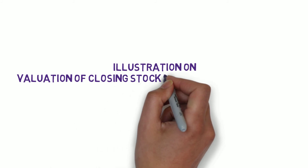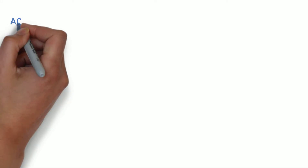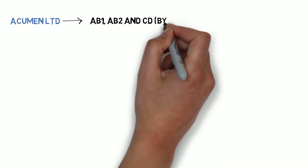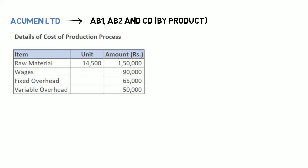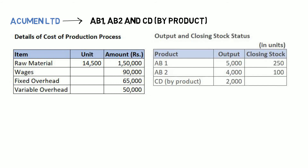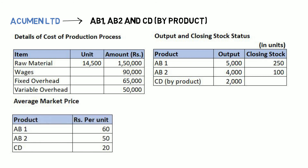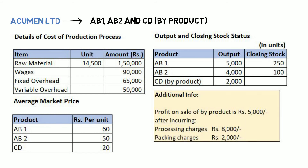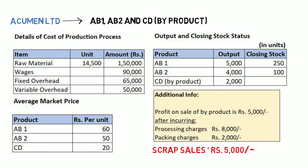The next illustration is on valuation of closing stock in case of joint products. Acumen Limited has two joint products, AB1 and AB2, and one by-product, CD. Here are the details of the cost of the production process, the output and closing stock status of the joint products and by-product, and the average market price. Additionally, there is a profit on sale of the by-product of 5,000 rupees after incurring separate processing and packing charges, and scrap sales amount to 5,000 rupees.